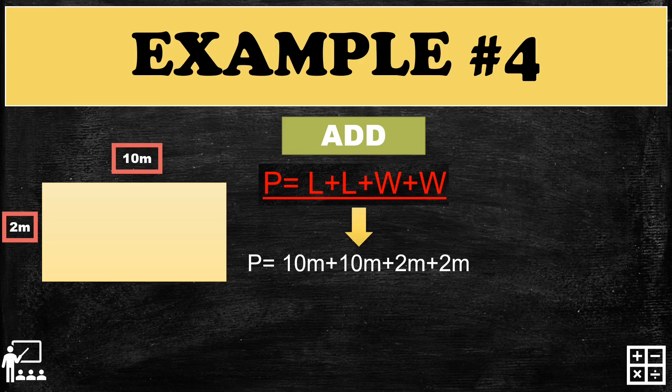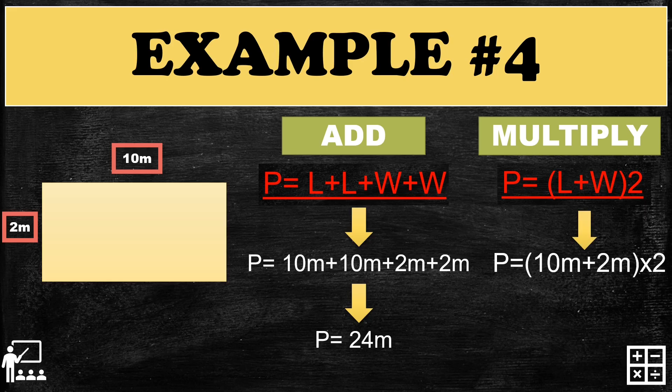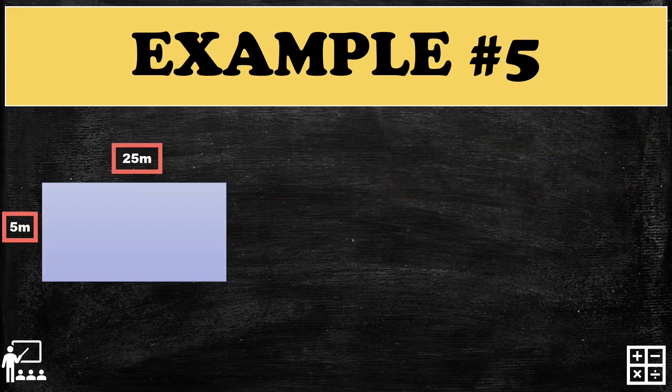Let's try another example. Using the addition formula: 10 + 10 + 2 + 2 gives you 24 meters. Using the multiply formula: 10 + 2 = 12, multiplied by 2, also gives you 24 meters.